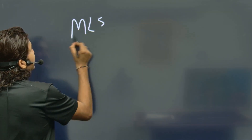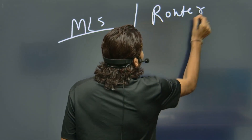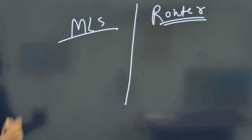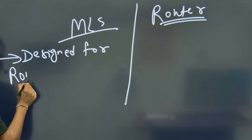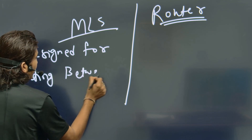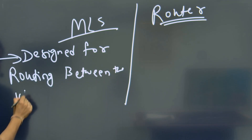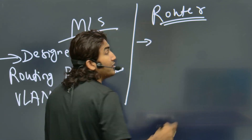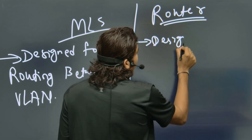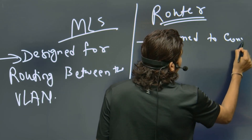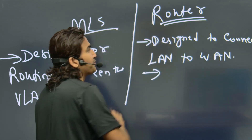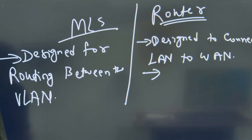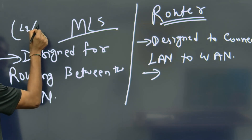The first difference between MLS and router: MLS is designed for routing between VLANs — inter-VLAN routing. Router is designed for advanced routing, to connect LAN to WAN, and to support a variety of WAN technologies that MLS cannot support.